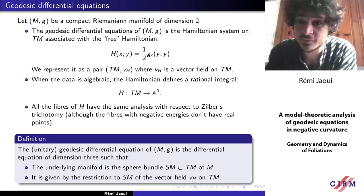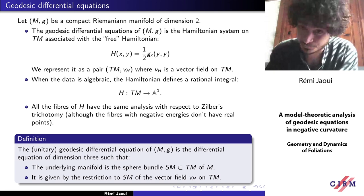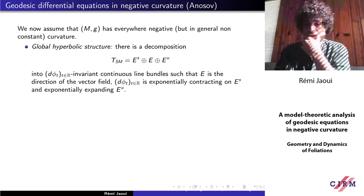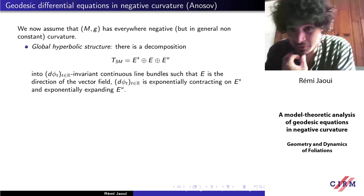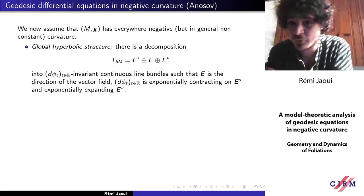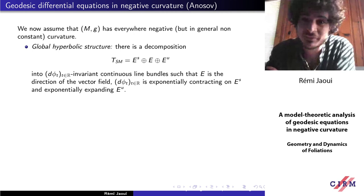We want to study this decomposition in terms of Zilber's trichotomy. Let me describe what we know about the dynamics of the real locus of this differential equation. We assume the Riemannian manifold is compact and has negative curvature. Then results of Anosov from 1969 apply. To work with an algebraic structure, you cannot assume the curvature is constant, since we don't know of any algebraically presented Riemannian manifold with constant negative curvature, but there are many with non-constant negative curvature.